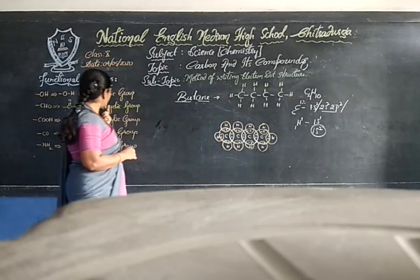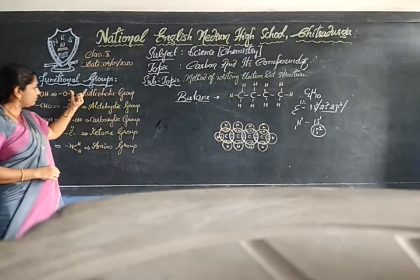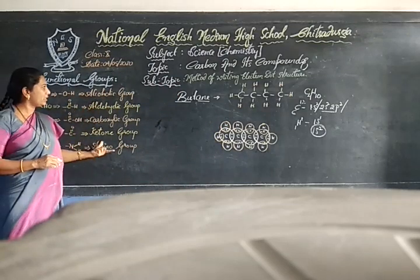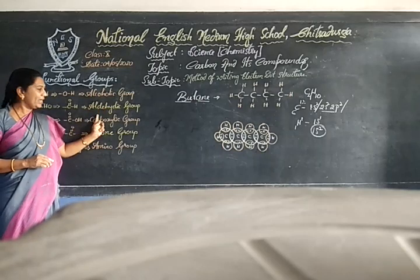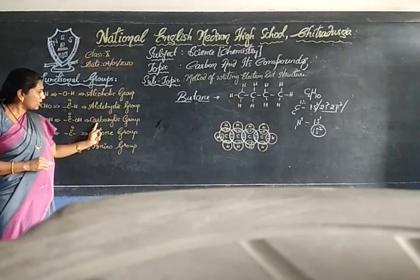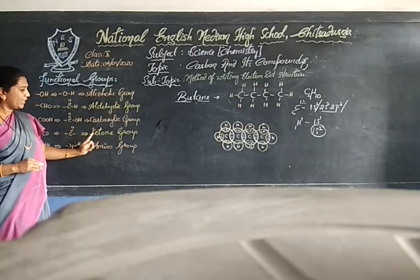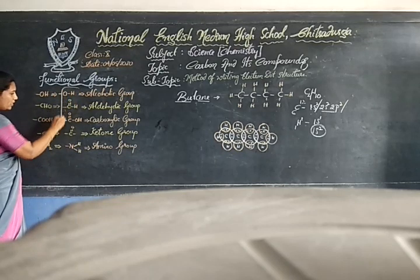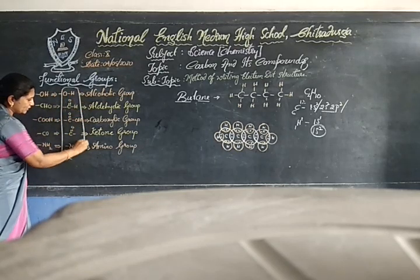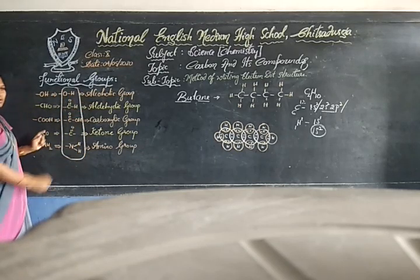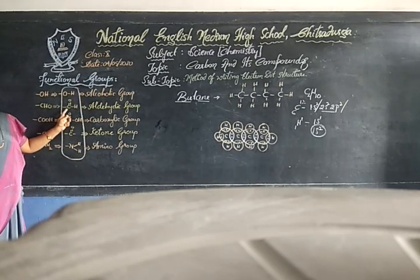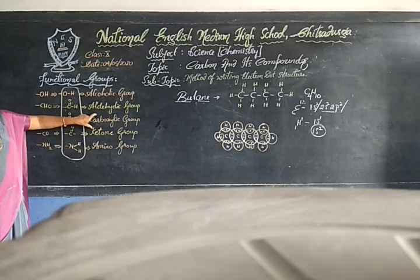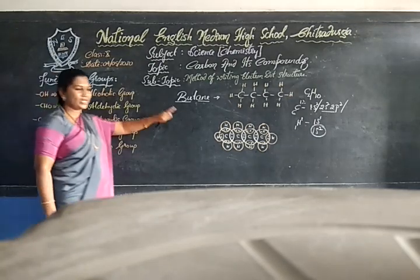For the electron dot structure, let us now see how to write the functional groups. The main five types of functional groups are: alcohol group, aldehyde group, carboxylic group, ketone group, and amide group. I will now show the expanded form of each functional group. Let us take the carboxylic group and see how it changes the structure.